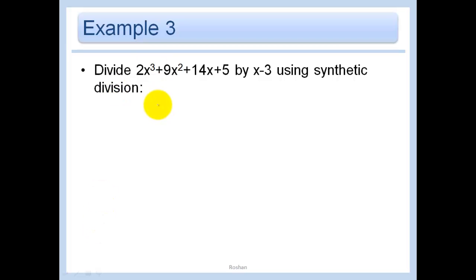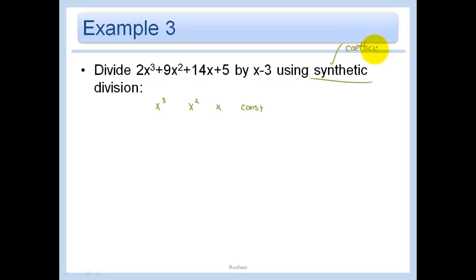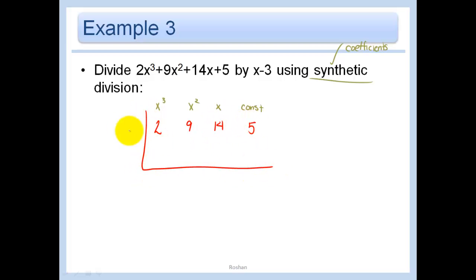For synthetic division, I'll note placeholders: cubed, squared, x, and constant, since we only look at the coefficients. For 2x cubed plus 9x squared plus 14x plus 5, the coefficients are 2, 9, 14, and 5. Out to the side we put the zero of the divisor. For x minus 3, x equals 3 is our zero, so we put 3 out here.